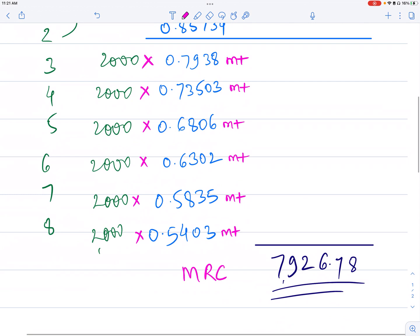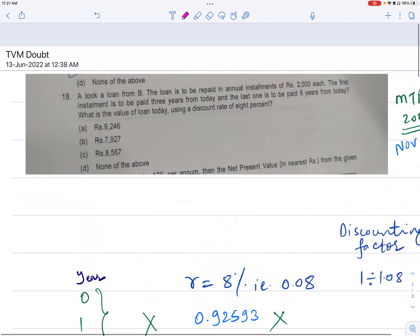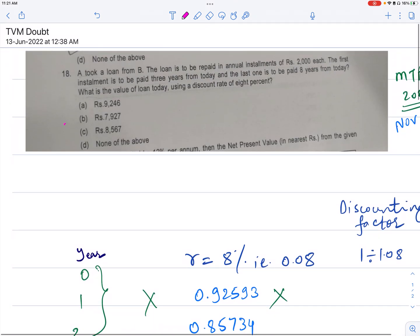If you add it, the total answer comes to Rs. 7,926.7 something. If you round off the decimal, it comes to Rs. 7,927. That is option number B.